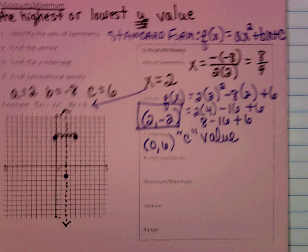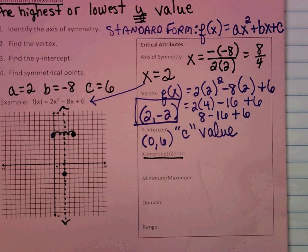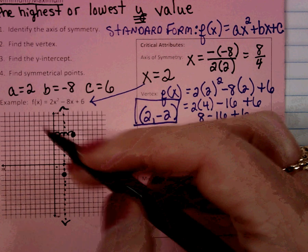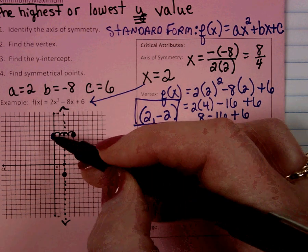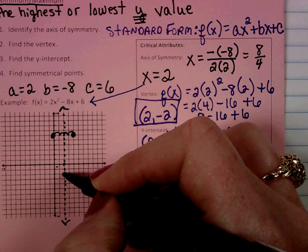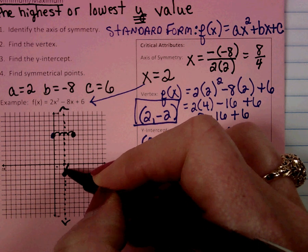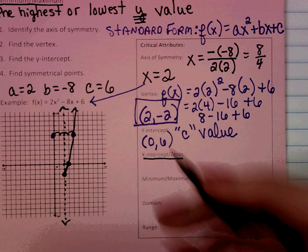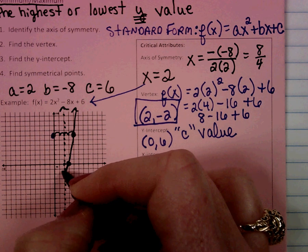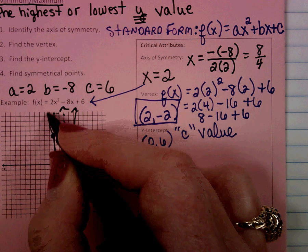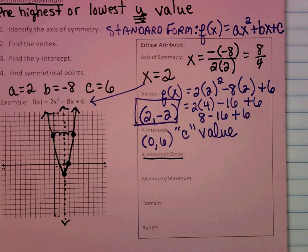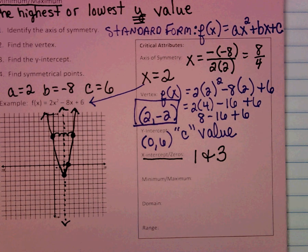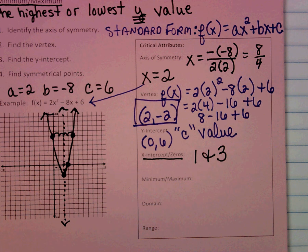The next critical attribute to find are the x-intercepts or zeros. Again, the calculator would be a really useful tool here. The parabola is narrow, so as we extend the graph it's going to barely increase. We can see that one x-intercept is at 1 and the other is at 3. We could check that with a calculator, and we'll learn other ways to determine intercepts as well. So our x-intercepts are 1 and 3.